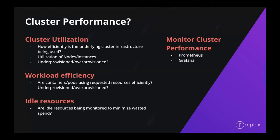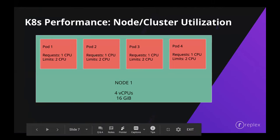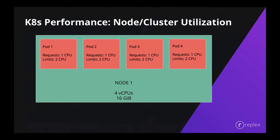Let's jump to the cluster utilization aspect of cluster performance. Take the example of a Kubernetes cluster with a worker node — an M5 XLarge AWS instance. We've got four pods running on this instance, and every pod is requesting one CPU with limits of two CPUs. Essentially, Kubernetes is going to set aside and guarantee one CPU for each pod. This reserved CPU cannot be used by any other pod or container. If a container starts to exceed its limits, it could be throttled by Kubernetes or moved to a new node which has enough resources to fulfill the pod's requirements.